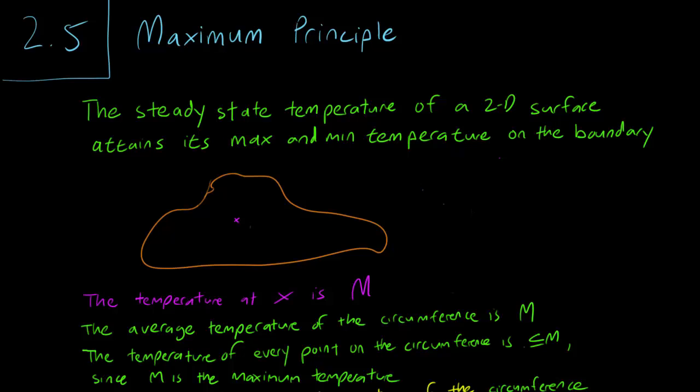Let us reflect this fact by drawing the circle in pink. Every point on the circumference has the same temperature as the center, which is M. So we can pick another point X somewhere on the circumference of the first circle.